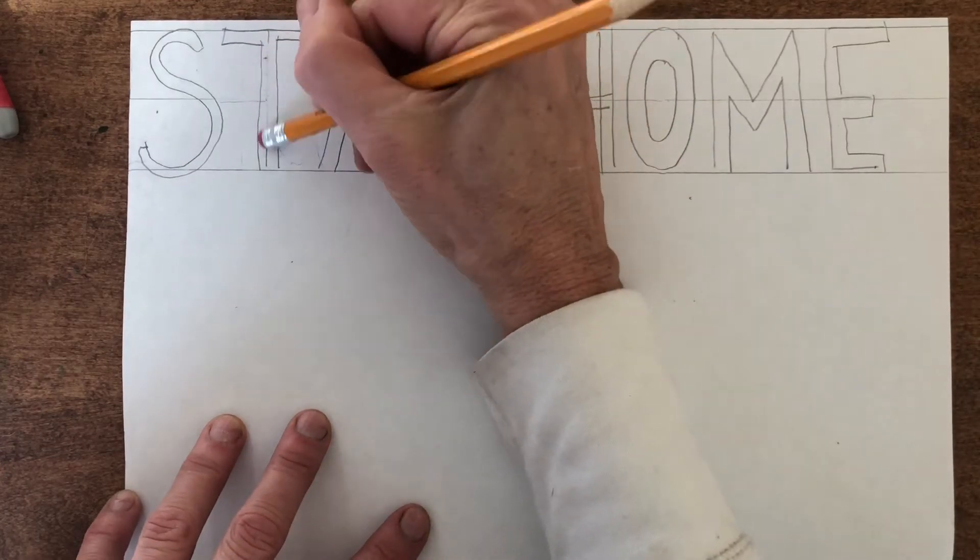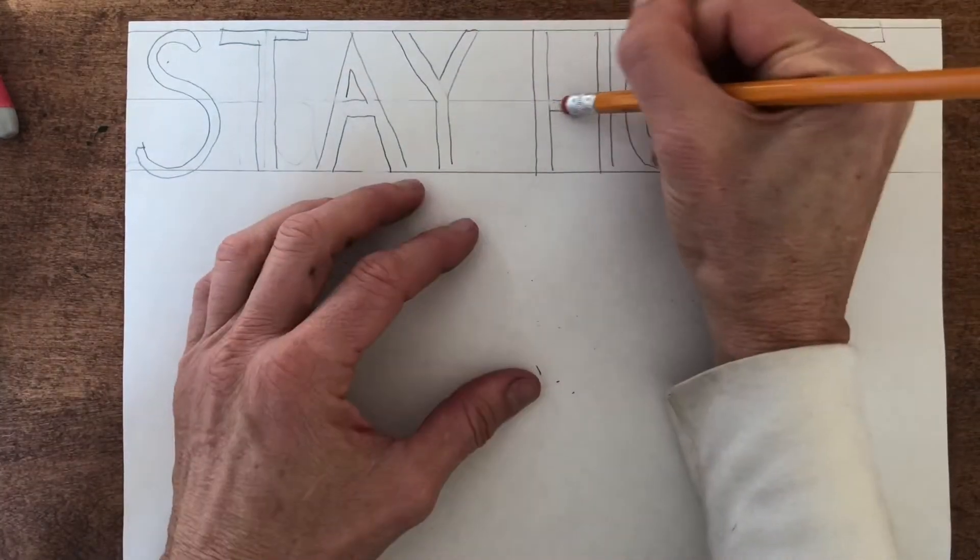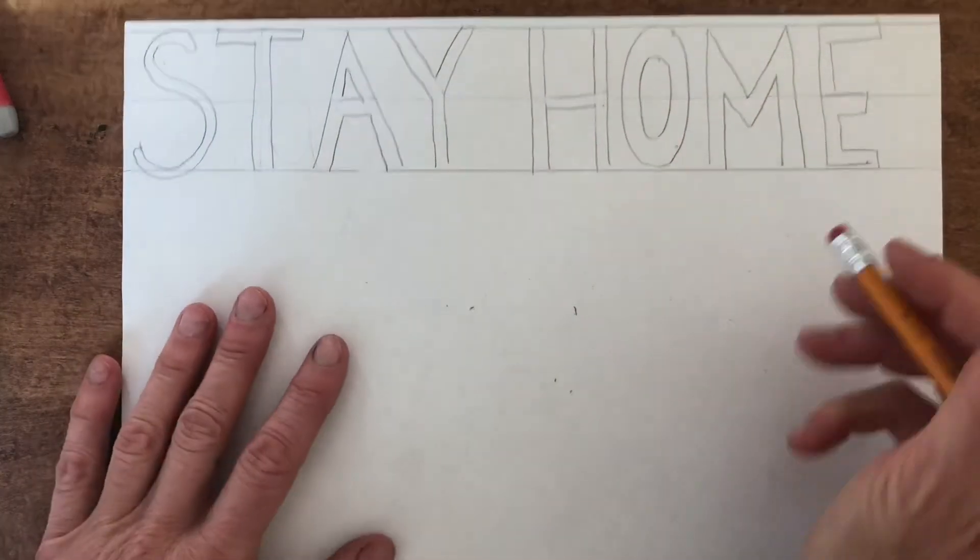Okay. And it looks like only really the T would need to have a little line erased. Maybe a little bit in here. Okay. So we've got our block letters now.